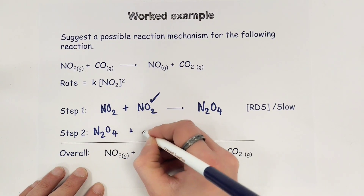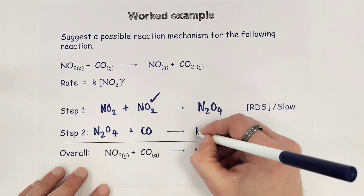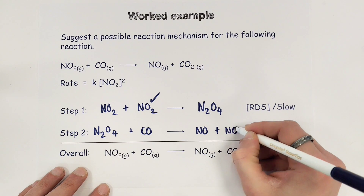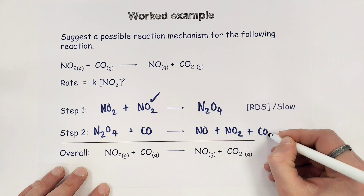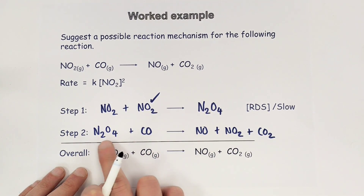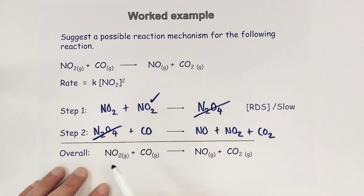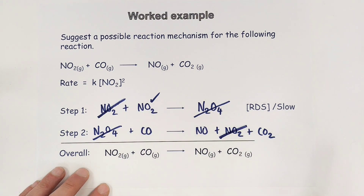I'm going to react N2O4 with carbon monoxide, which I need in my overall equation. I'm going to form some nitrogen monoxide because I need that as one of my products at the end. I'm also going to form some NO2 because I need to cancel that down to reach my overall equation, and finally some carbon dioxide. I can cancel down the N2O4 and an NO2, which again leaves me with NO2 plus CO forming NO plus CO2, agreeing with the overall equation.